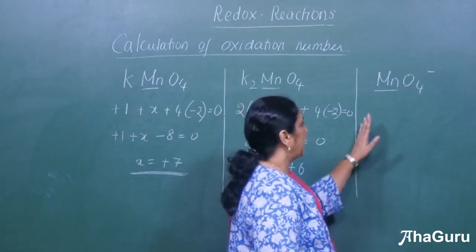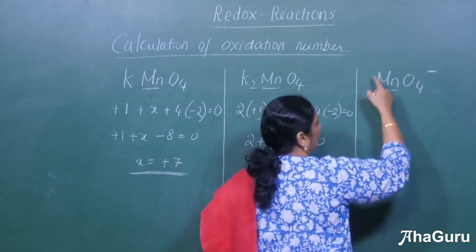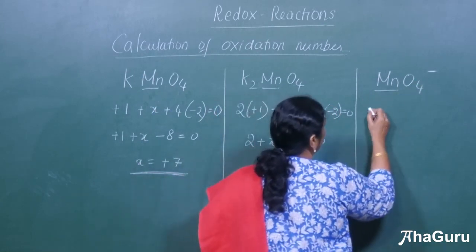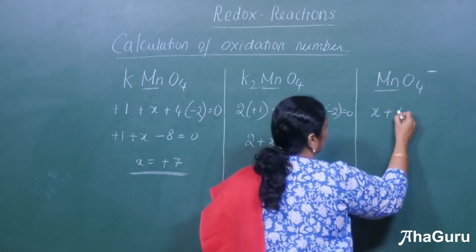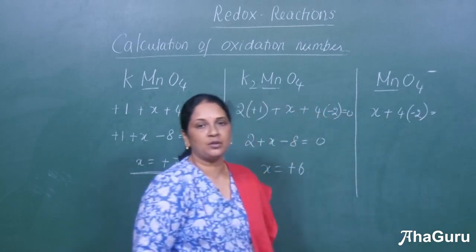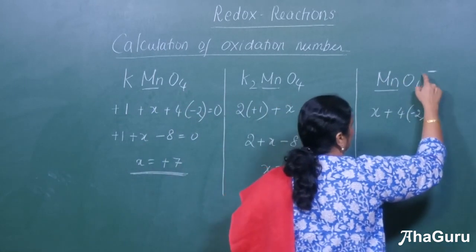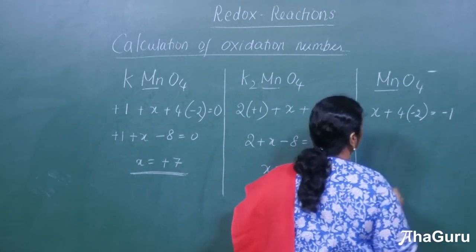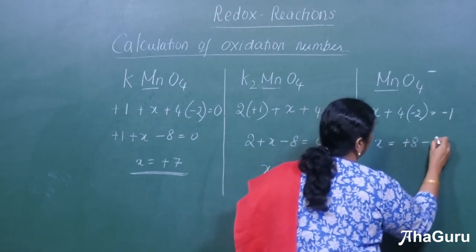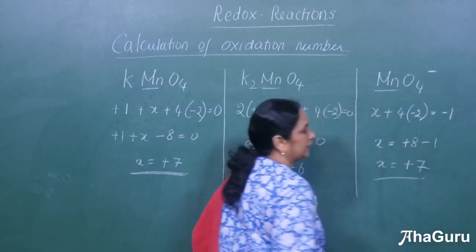Let us see one more example: MnO4⁻. Notice the charge — for this compound the total oxidation state equals −1. So: x + 4 × (−2) = −1, because it is not a neutral molecule; it is a charged species. Solving: x − 8 = −1, so x = +7. That is how we calculate the oxidation state for a charged ion.